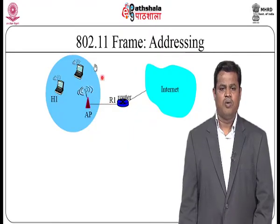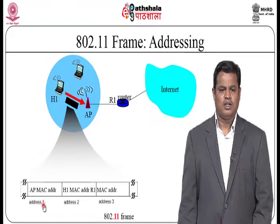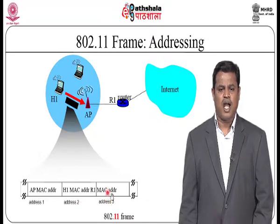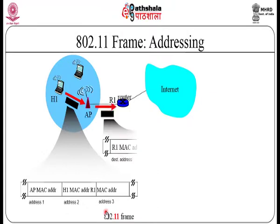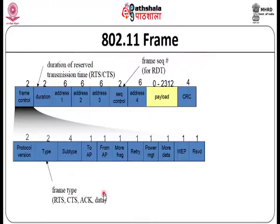This is how the device connects to the internet through the access point. There are 3 addresses: address 1 has the access point MAC information, address 2 is the H1 MAC address as the source, and address 3 is the MAC address for forwarding to the destination. Once it gets router 1 as the destination MAC address in the wired network, there are 2 addresses: router 1 is the destination and H1 MAC address is the source. Apart from that, there is additional information like sequence number and control signals for avoiding collision — RTS (request to send) and CTS (clear to send).